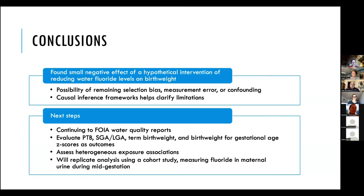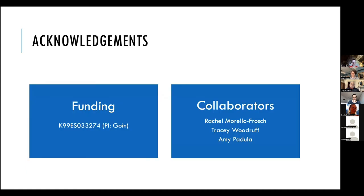In conclusion, we found a small negative association of the hypothetical intervention of reducing fluoride levels to 0.5 ppm on birth weight, and we didn't see an association with gestational age. There is the possibility of remaining selection bias, measurement error, and confounding. But using a causal inference framework helps us identify these potential sources of bias so we can work towards mitigating them. Next steps include continuing to FOIA water quality reports to fill in missing fluoride levels, adding preterm birth, small and large for gestational age, term birth weight, and birth weight for gestational age z-scores as additional outcomes, evaluating heterogeneous exposure associations, and replicating the analysis in a pregnancy cohort study measuring fluoride levels in maternal urine.